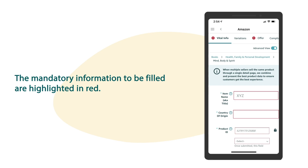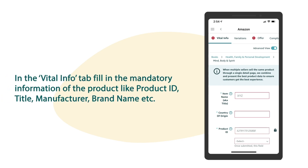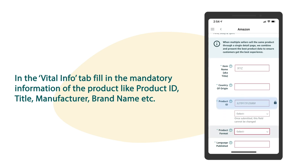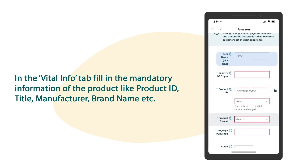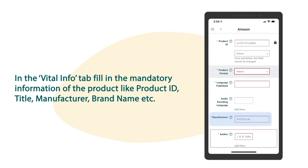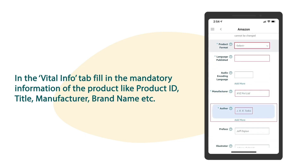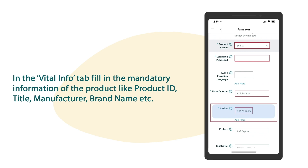In the vital info tab, fill in the mandatory information of the product like product ID, title, manufacturer, brand name, etc.